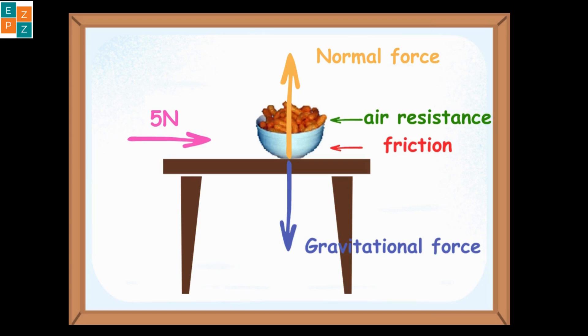Then, why did the object still move towards the right? The upward and downward forces cancel each other. So there is no question of object moving in vertical direction. The bowl moves to the right because the force of 5 newtons towards the right is more than the sum of these two forces acting toward the left.